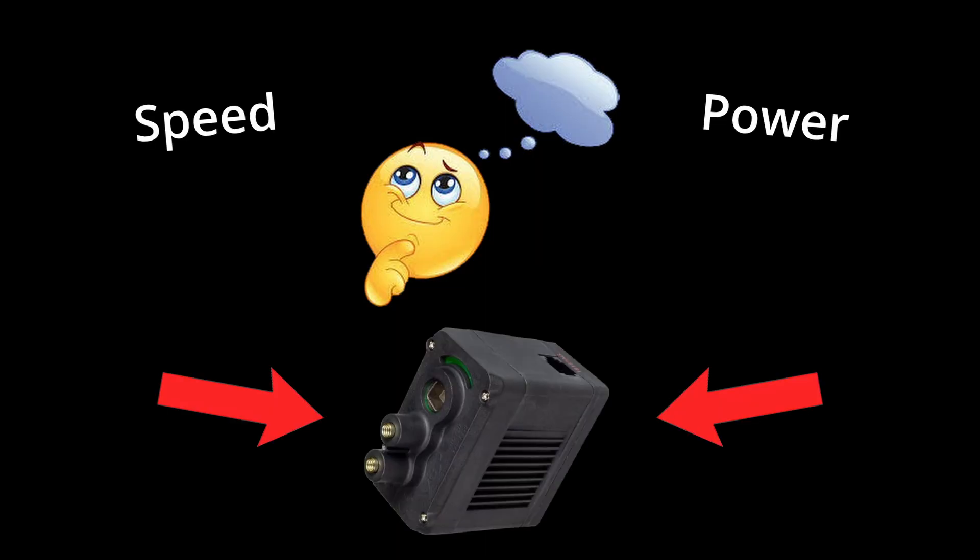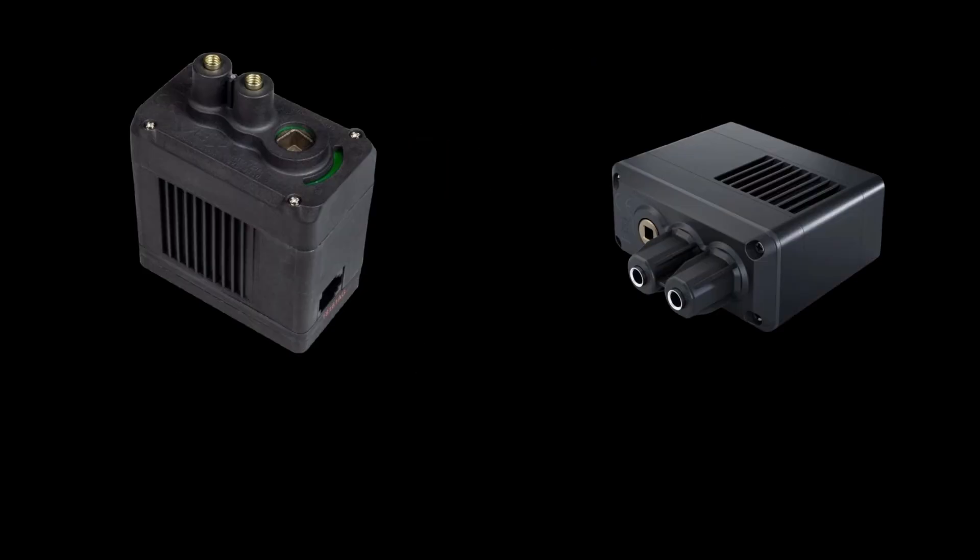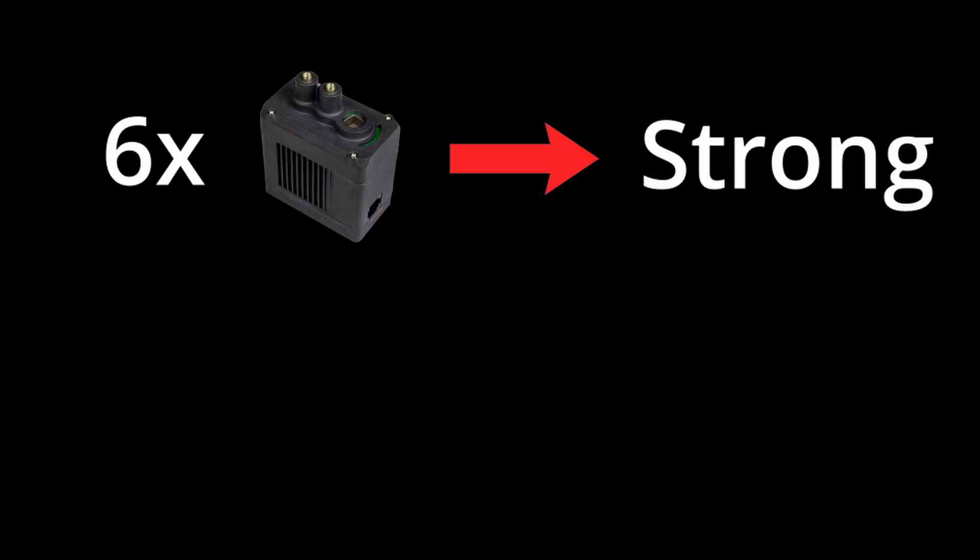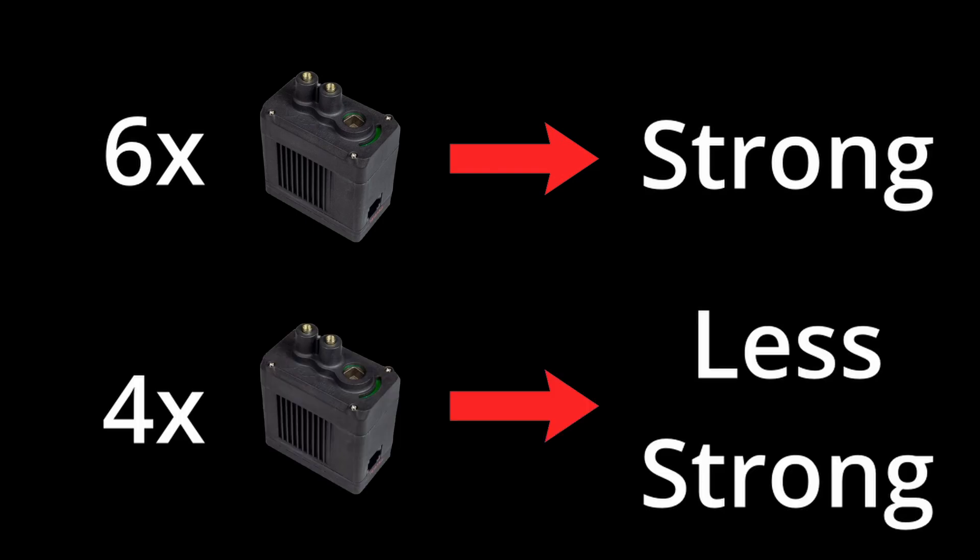The motors you have on your chassis are also really important in determining the speed and power of your chassis. VEX offers the standard 11 watt motors and the smaller 5.5 watt motors. We recommend using six 11 watt motors for your chassis, with four motors being the absolute minimum.